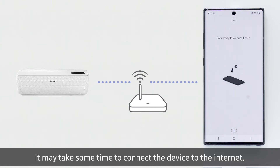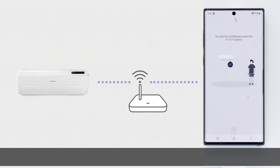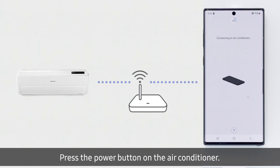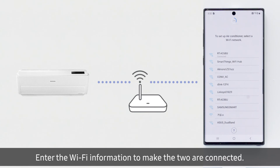It may take some time to connect the device to the internet. Press the power button on the air conditioner. Enter the Wi-Fi information to connect the two devices.